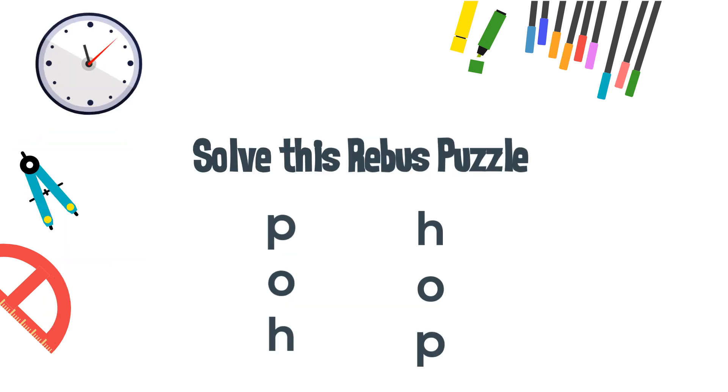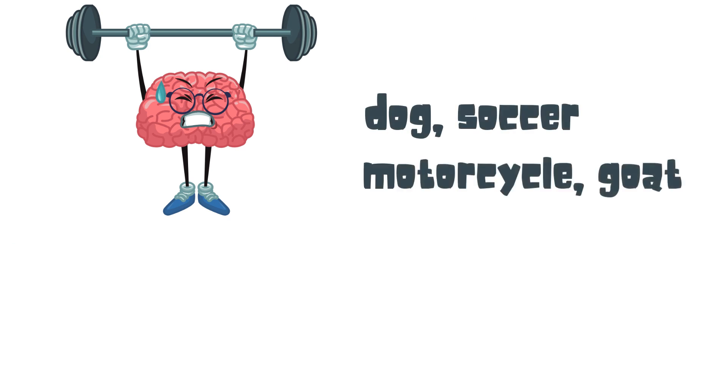The answer to our puzzle was hop up and down. And now let's get to the five words you memorized at the beginning. Let's see how we did. Dog, soccer, motorcycle, goat, and tire.